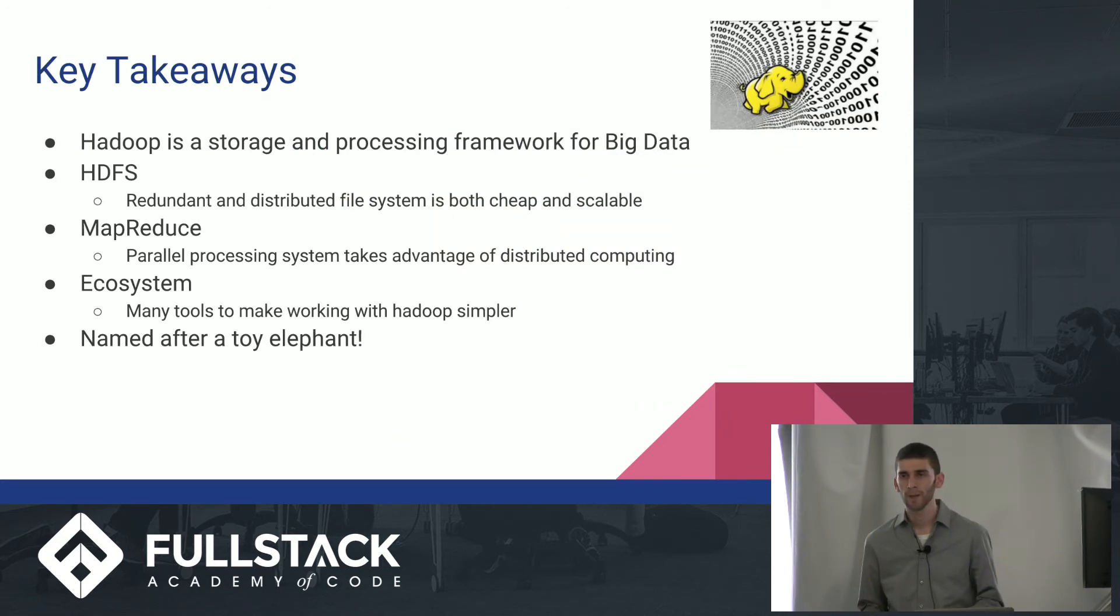Now, some key takeaways. Hadoop is basically a storage and processing framework for big data. It's got two main components. The Hadoop distributed file system, which basically has redundant and distributed files, which is both cheap and scalable. Then there's MapReduce, which is basically a parallel processing system that takes advantage of distributed computing across a lot of nodes at the same time. And the ecosystem, which is just a lot of new tools to make it easier to work with Hadoop.